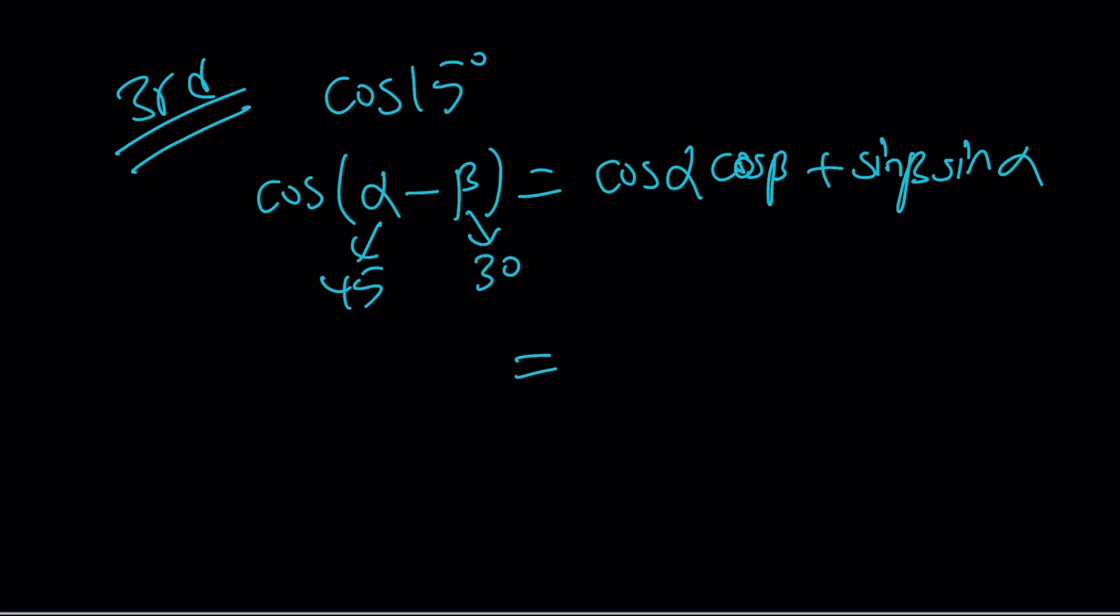So cos45 times, I could probably directly write it. Cos45 is √2/2. Cos30 is going to be √3/2. And then plus sin45 is going to be √2/2, and it's going to be 1/2. And it's going to be (√6 + √2)/4.